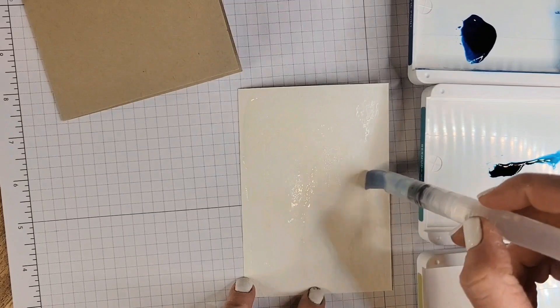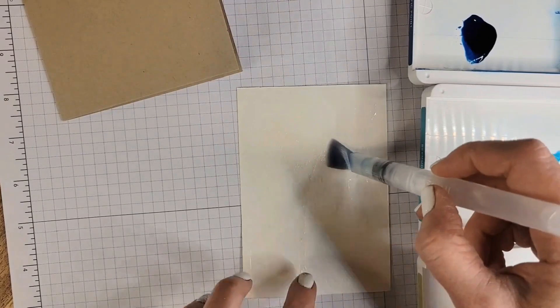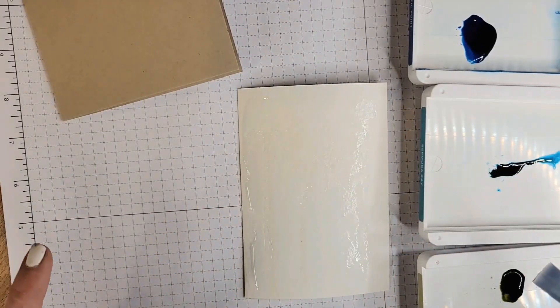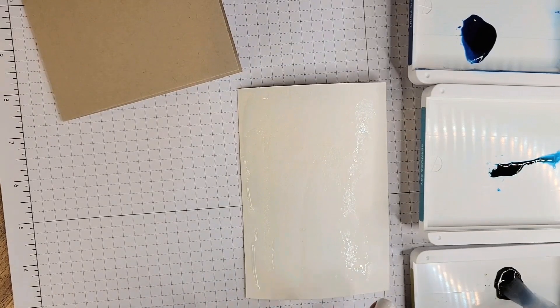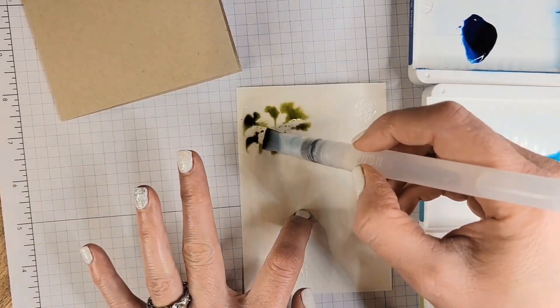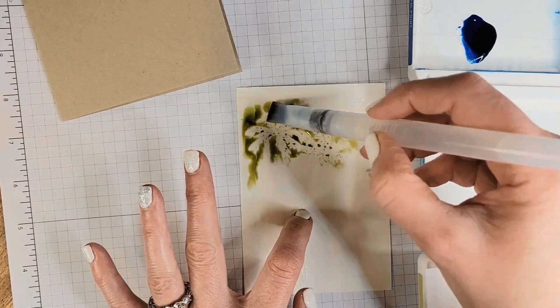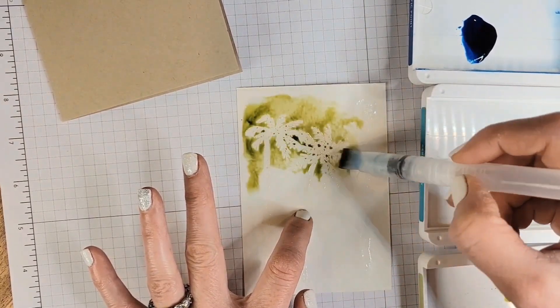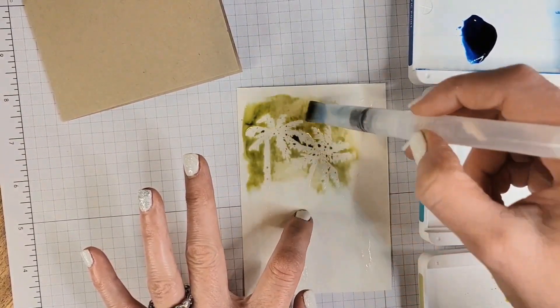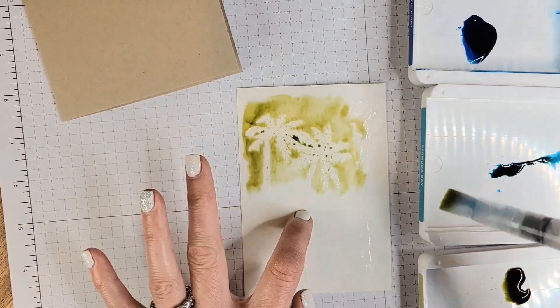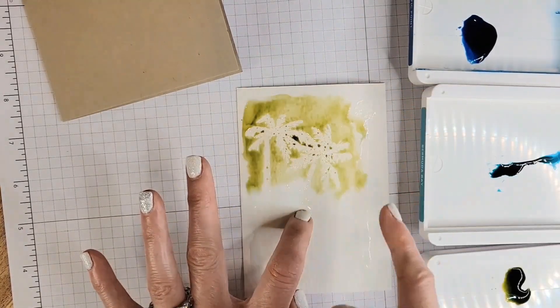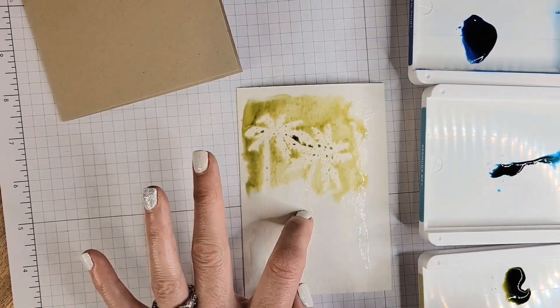Looks like our paper is wanting to curl a little bit, which is okay, that'll just add to the effects of the water coloring. So, Pear Pizzazz on top of the leaves, palm tree leaves, there we go. And like I said, I wanted kind of a rough edge, so I'll just let that be as is.